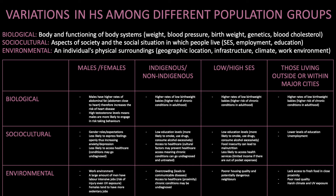Low and high SES. For sociocultural factors, low education levels mean there is a higher chance individuals will smoke, use drugs or consume alcohol excessively. There is also food insecurity, which may lead to malnutrition. Individuals with low SES are less likely to access health services — they may have limited income, which may inhibit them from accessing healthcare if there are out-of-pocket expenses. Environmental factors include poorer house quality and potentially dangerous neighbourhoods.